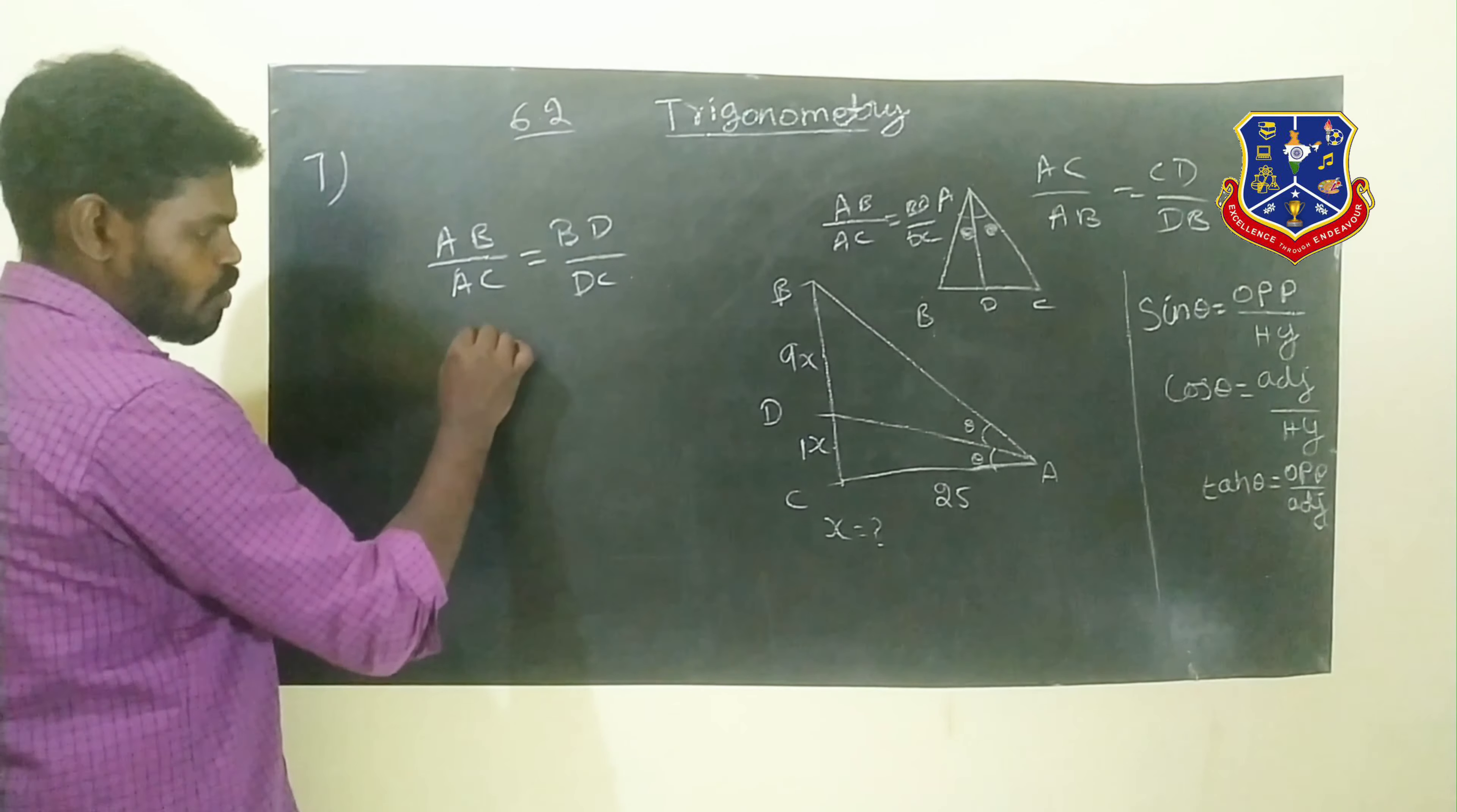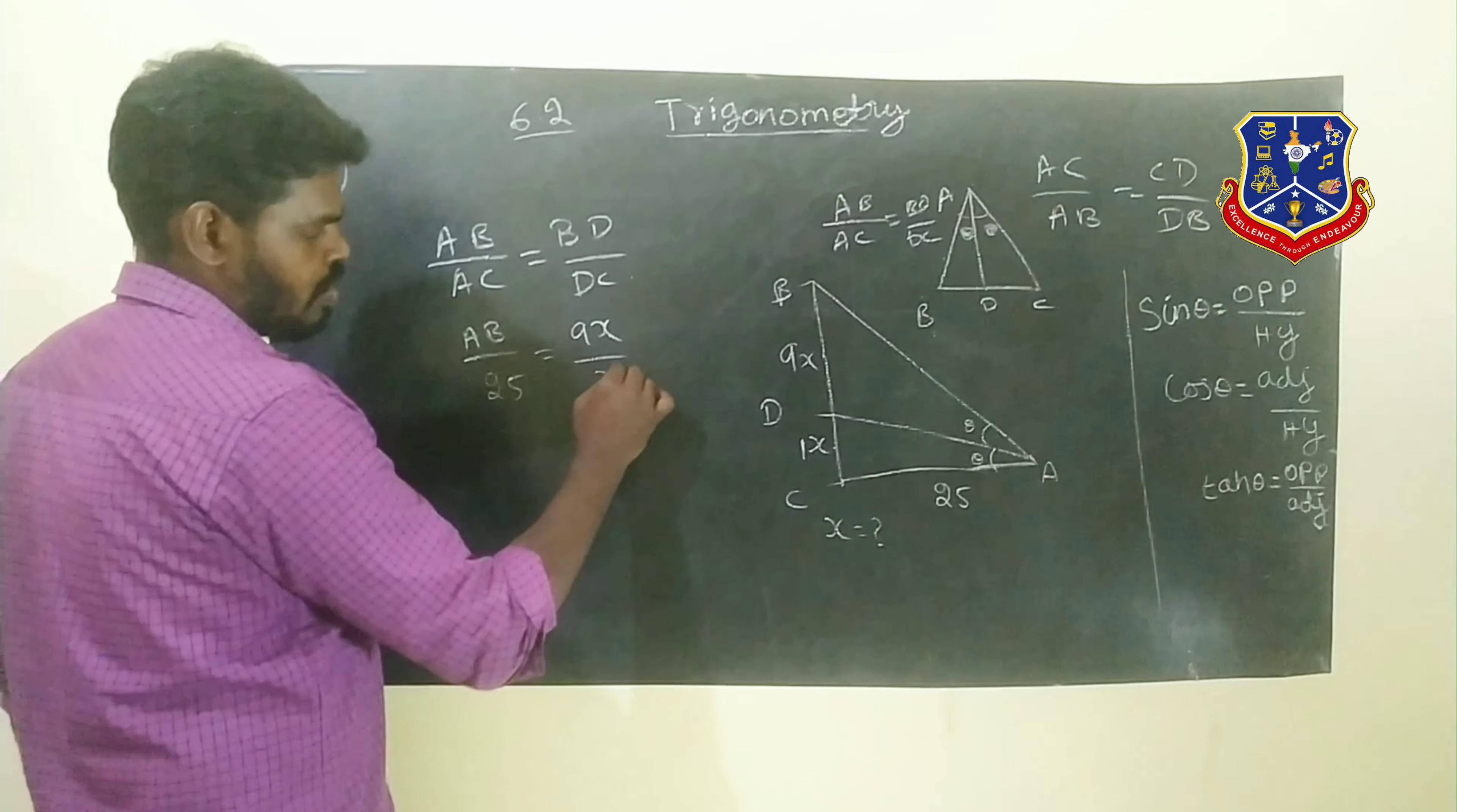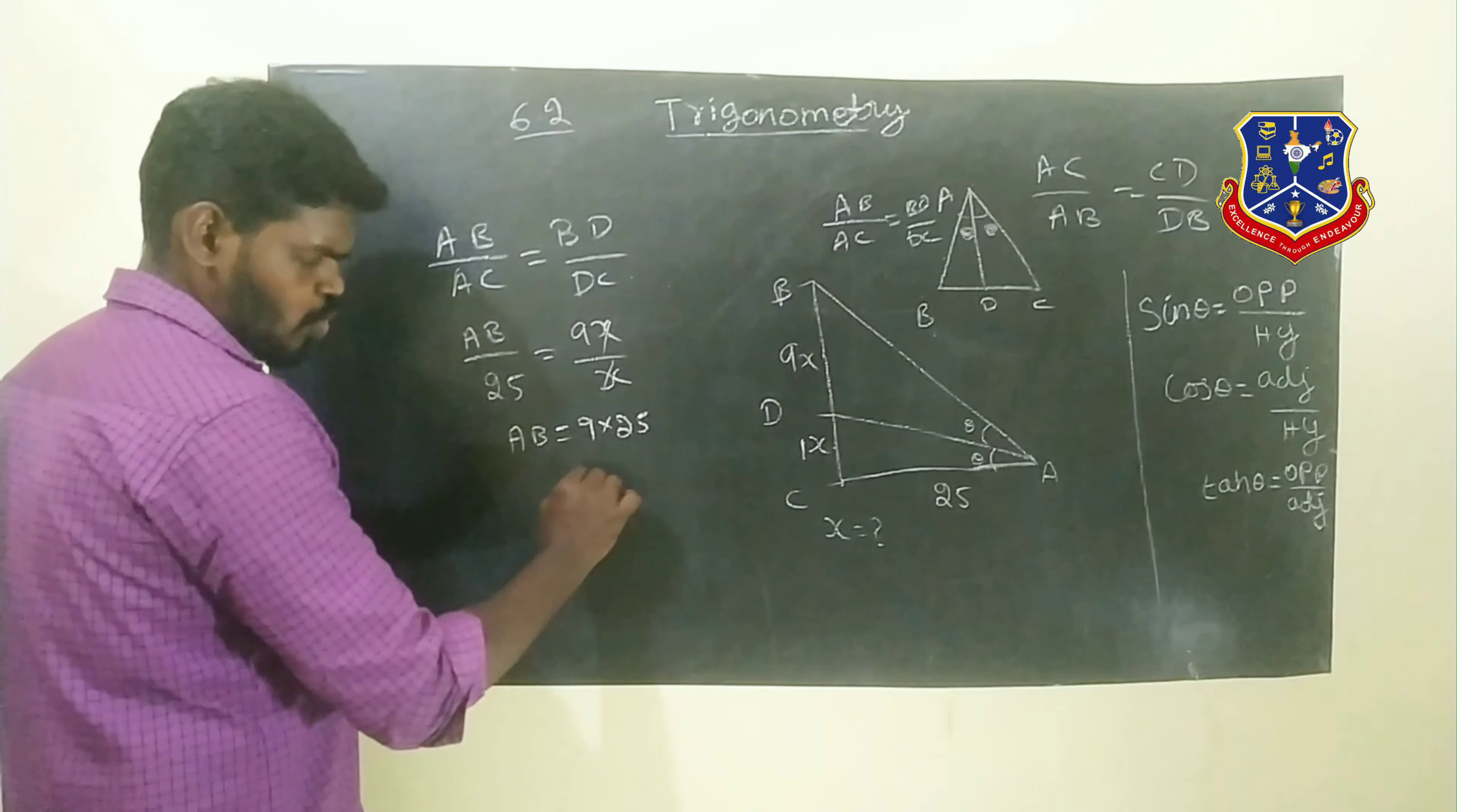AB over AC equals 25. This equals BD which is 9x divided by DC which is 1x. We can cancel the x, so AB equals 9 times 25. Therefore AB equals 225.